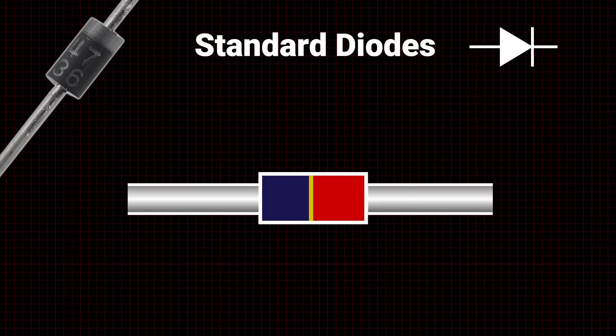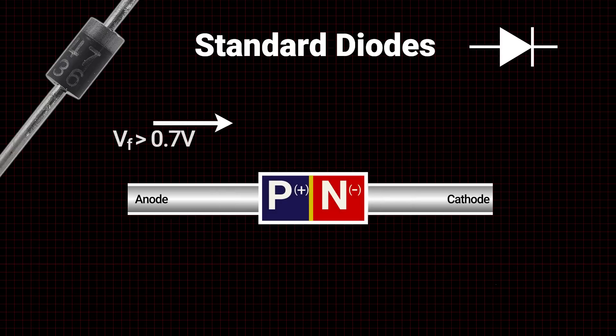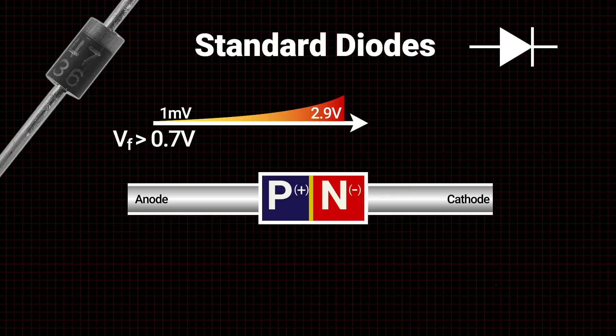Standard diodes with doped semiconductor regions allow the flow of current in forward bias as long as the forward voltage, around 0.7 volts in typical diodes, is exceeded. In reverse bias, diodes block current flow unless the maximum reverse voltage is exceeded.